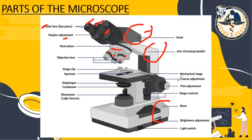We have two adjustment knobs: the coarse adjustment knob, which provides bigger movement to move the microscope stage up or down, and the fine adjustment knob, which provides smaller, more precise movement. Then we have our stage, which is the section where the specimen is placed for viewing. On the stage, we have stage clips that hold the specimen slides in place, and stage controls that can move the stage left or right, and up and down.